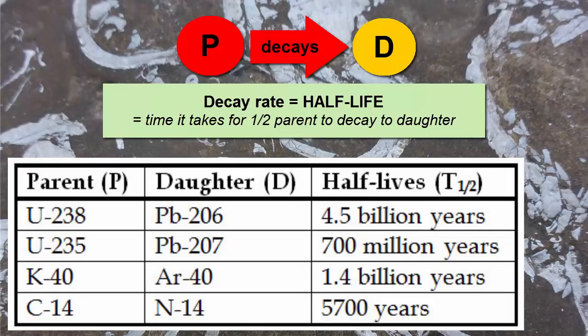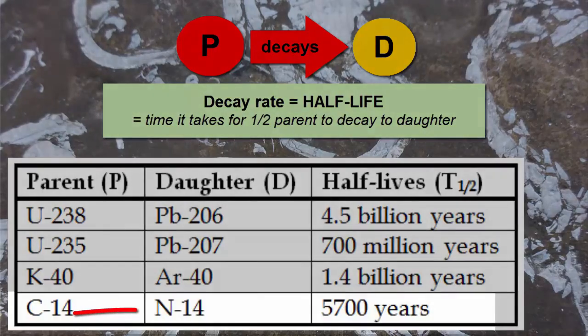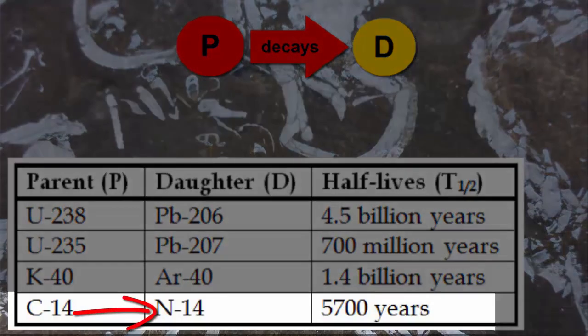For example, carbon-14 decays to nitrogen-14 with a half-life of 5,700 years.